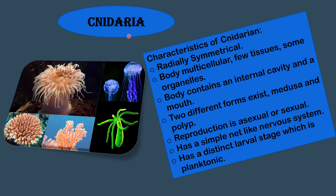The second phylum is Cnidaria. Characteristics of Cnidarians: they are radially symmetrical, multicellular, with few tissues and some organelles. The body contains an internal cavity and a mouth. Two different forms exist: Medusa and Polyp. Reproduction is asexual or sexual. They have a simple net-like nervous system and a distinct larval stage which is planktonic.